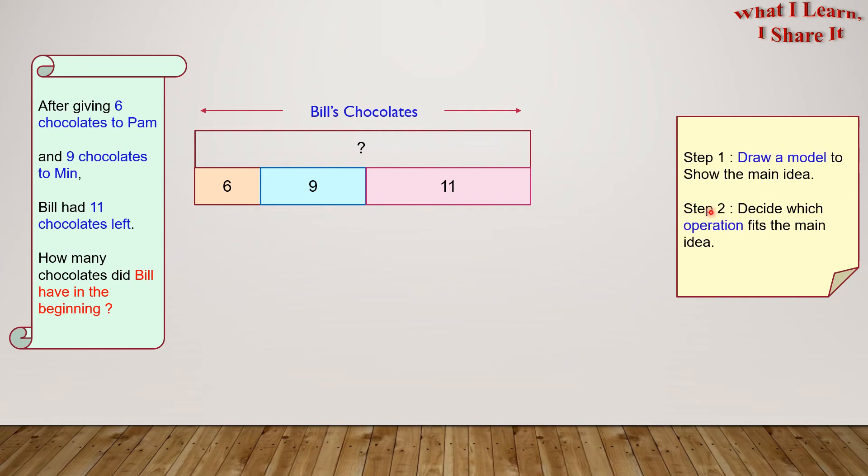Step 2: Decide which operation fits the main idea. Which operation should we use? Yes, since we are combining all of the chocolates that each of the people had, we should use addition. Let's put everything over here now.